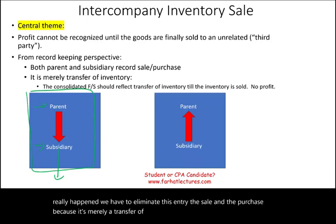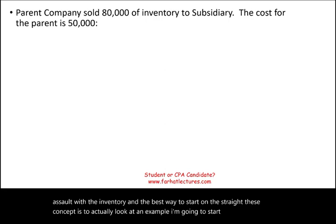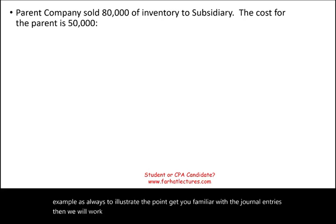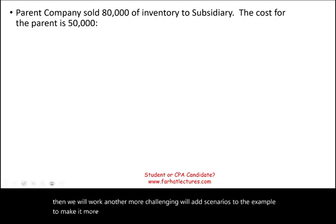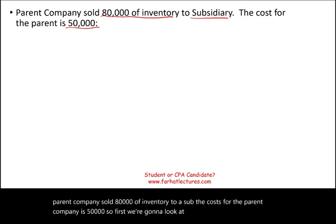The best way to illustrate this concept is to look at an example. I'm going to start with a simple example to illustrate the point, get you familiar with the journal entries, then we'll add scenarios to make it more challenging and make the point of the lesson. We have a parent company that sold $80,000 of inventory to a sub. The cost for the parent company is $50,000.